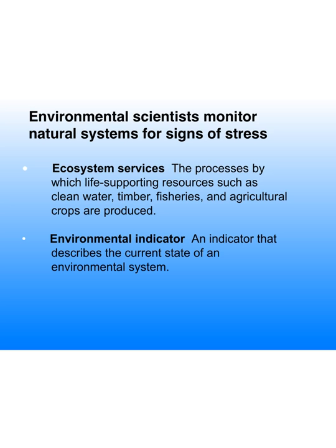An environmental indicator describes the current state of the environmental system — categories of things we look at to make judgments about the health of the environment. Think of it like going to the doctor for a checkup: they might check your temperature, look in your throat, check your skin, take a blood test, look at white blood cell count or cholesterol. All those things are human health indicators. Similarly, we're going to look at things that would be environmental indicators.